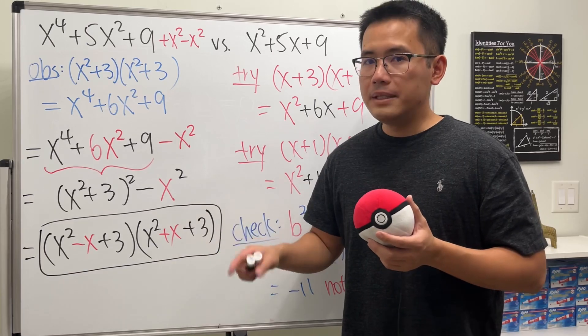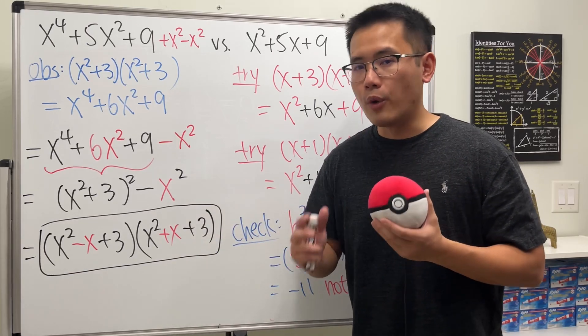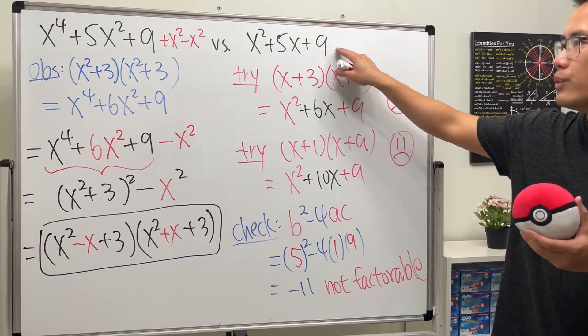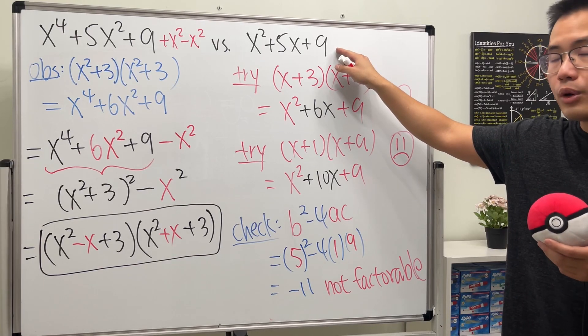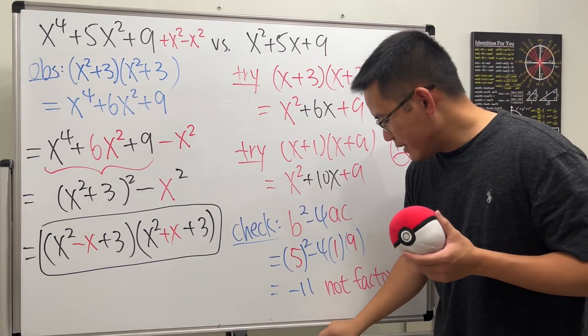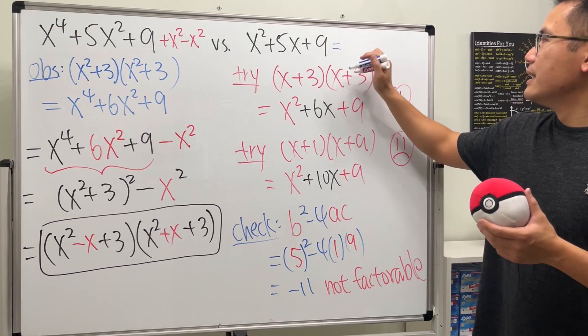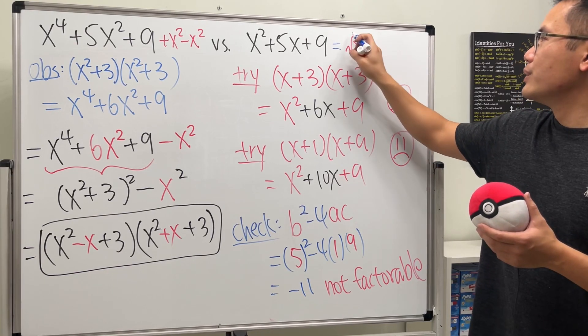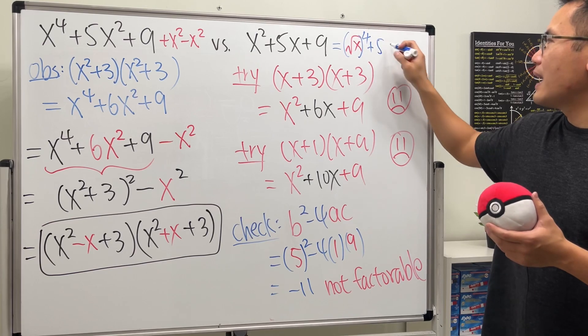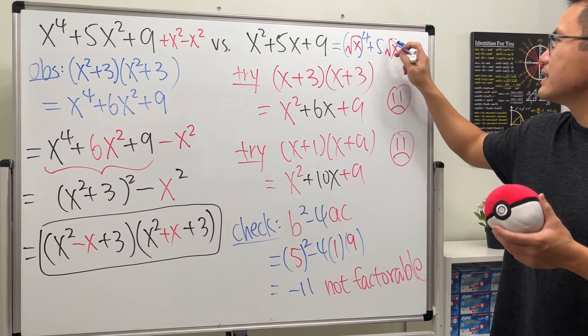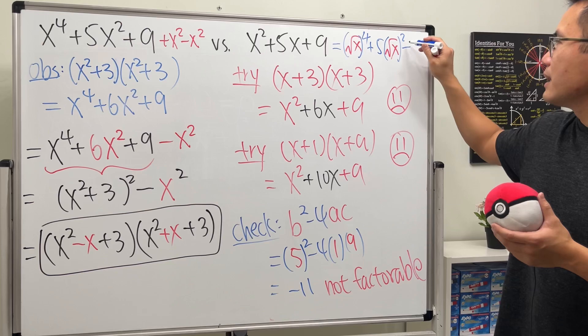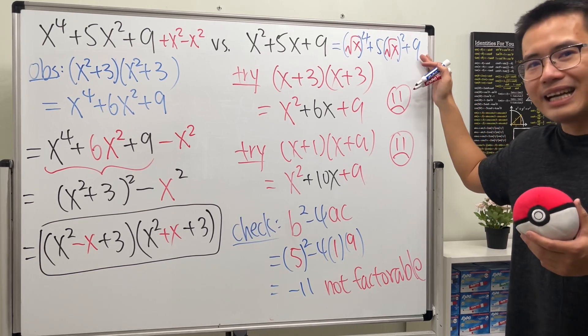And again, when we're saying factor, we should technically keep that as polynomial, meaning that the power of the x shall be whole numbers. Because again, if you look back here, we can do the same approach if you rewrite this as square root of x to the fourth power and then plus 5 square root of x squared plus 9, but let's not go there.